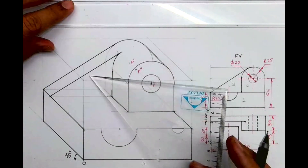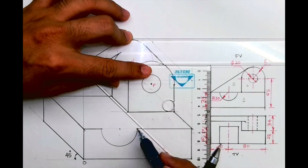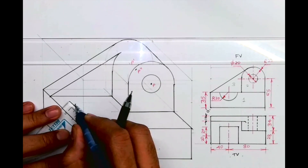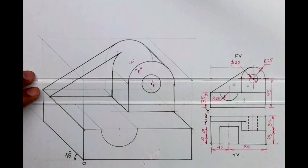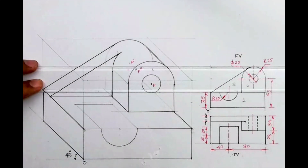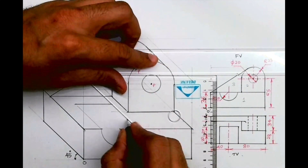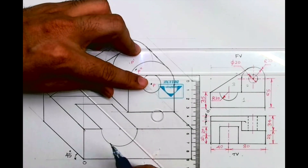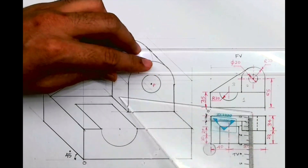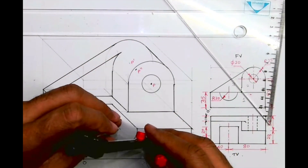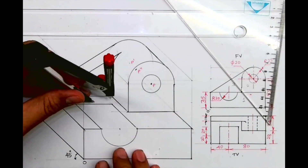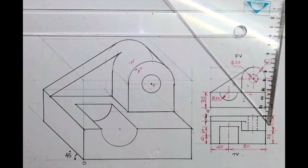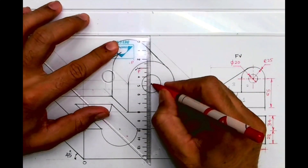We are done with the tangent part. Now we need to draw this circle — how much should I go behind? 40. So I will take this line behind by 40, and this also behind by 40. From this center point we will go behind by 40 and again draw radius 20. We are done with this oblique problem. I hope everyone understood this.